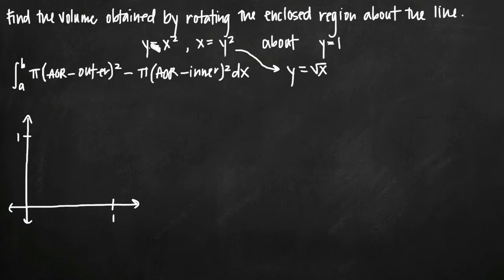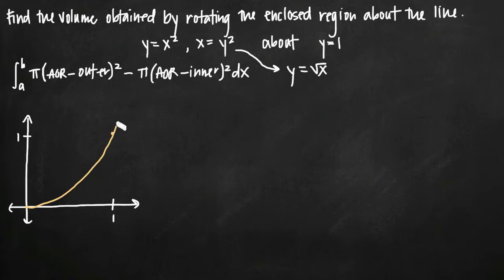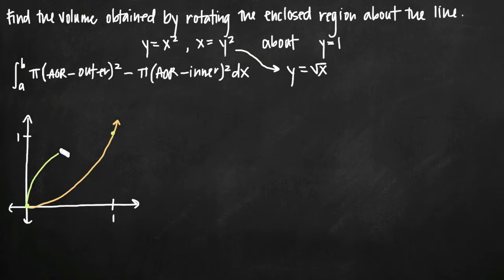Graphing y equals x squared, we know it's a parabola that opens upward with a vertex at (0, 0), passing through (1, 1). Then y equals the square root of x also passes through (0, 0) and (1, 1) but goes the opposite way. These two curves intersect each other at (0, 0) and (1, 1).